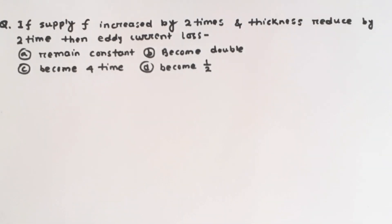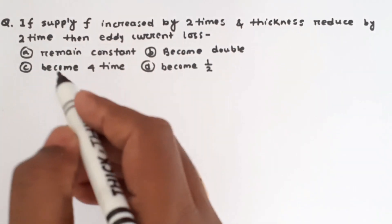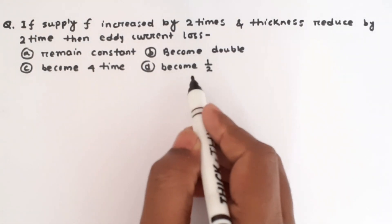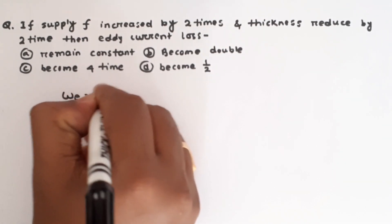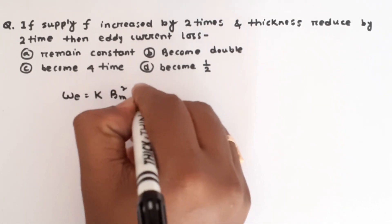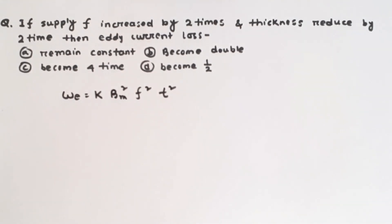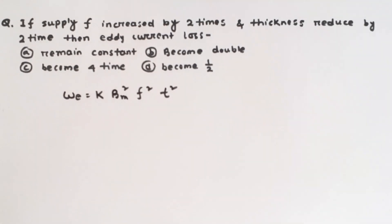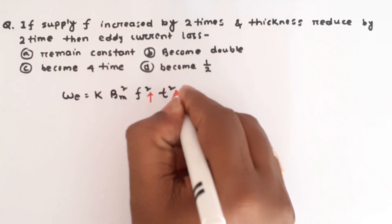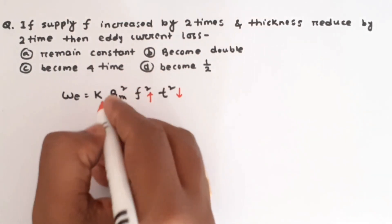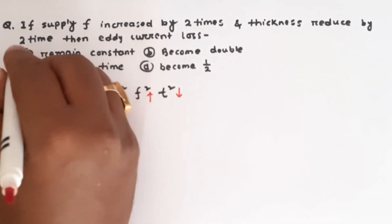Numerical 1: If the supply frequency is increased by two times and thickness is reduced by two times, then eddy current loss will — remain constant, become double, become four times, or become half? Using W_e = k·Bm²·f²·t²: frequency is doubled (f² becomes 4×) and thickness is halved (t² becomes ¼×). So the net effect is 4 × ¼ = 1, meaning eddy current loss remains constant. Option A is the correct answer.